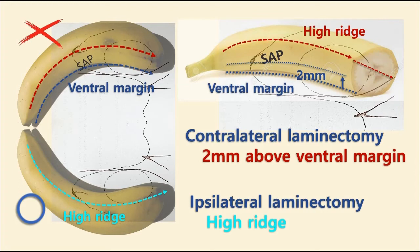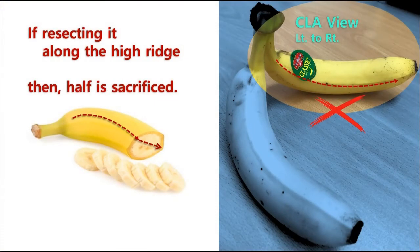we are reaching obliquely about 40 to 60 degrees. So when we are landing on the contralateral high ridge and cut it, half of the contralateral lamina can be sacrificed, and consequently lamina fracture might happen. Contralateral laminectomy must be done along the line 2 mm above from the ventral margin of the lamina. The accessing angle of ipsilateral laminectomy is quite different from that of contralateral laminectomy. Contralateral laminectomy on the high ridge means half of the lamina can be resected. Be careful of too much resection of the contralateral lamina.